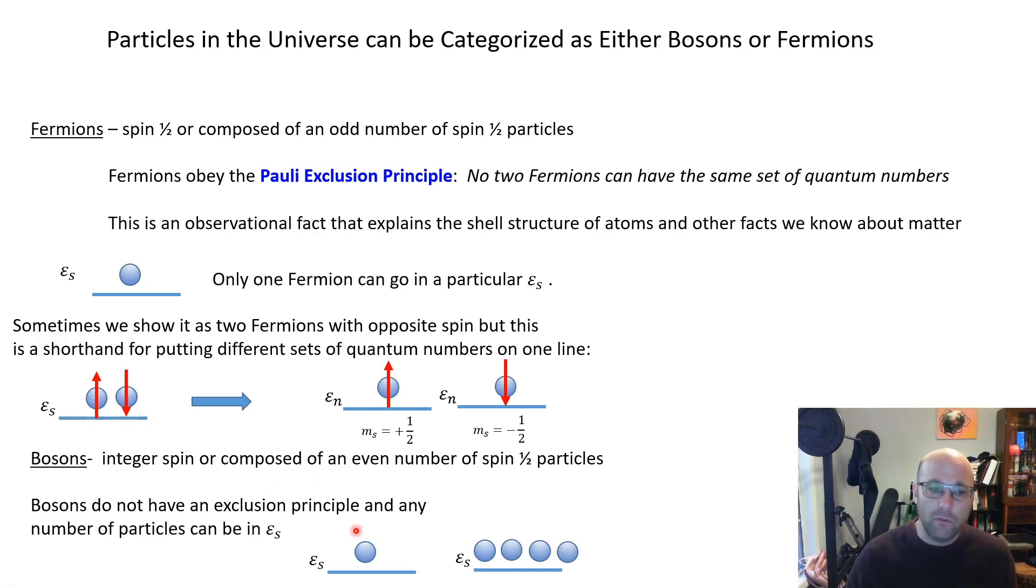In some ways this makes bosons a little bit harder to work with than fermions because there's such a restrictive way of occupying fermionic energy levels. With fermions it's a little bit easier to deal with them in some circumstances, whereas bosons you have a lot more possibilities.